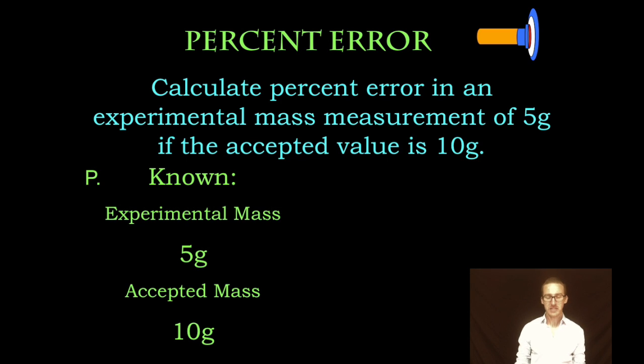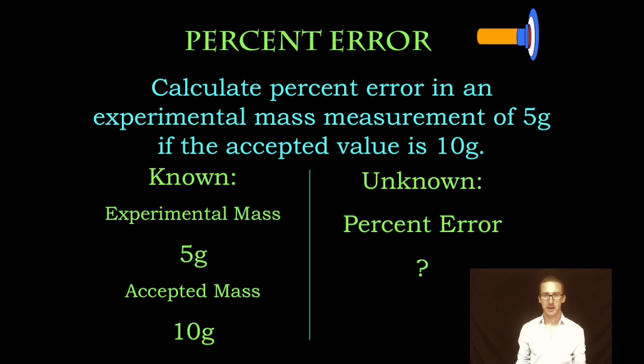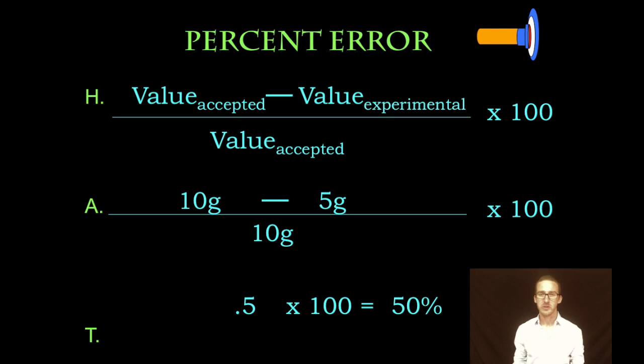What is my percent error? Laying out the parts now, how are we going to use those parts? Well, we're going to use the formula for percent error: accepted minus experimental divided by accepted times 100. Next, we're going to apply those parts to our plan of attack here. Our accepted is 10 minus 5, our experimental value, divided by accepted times 100.